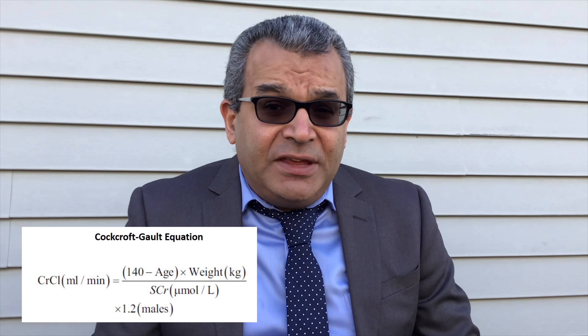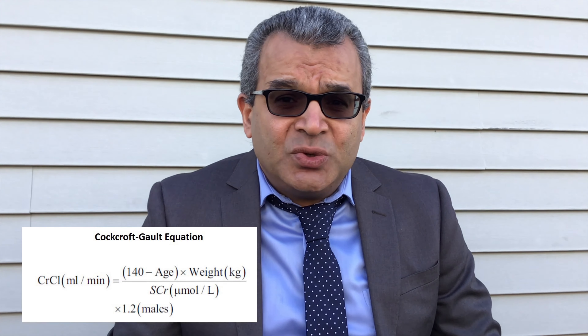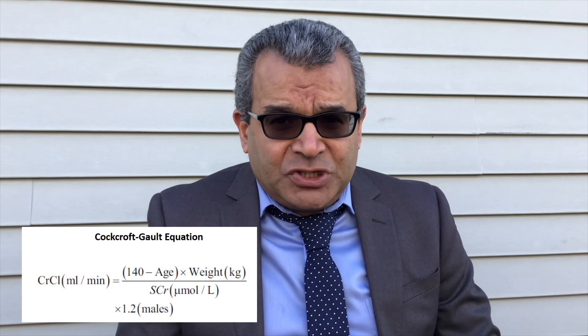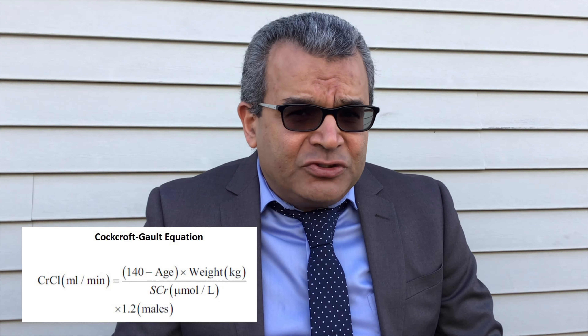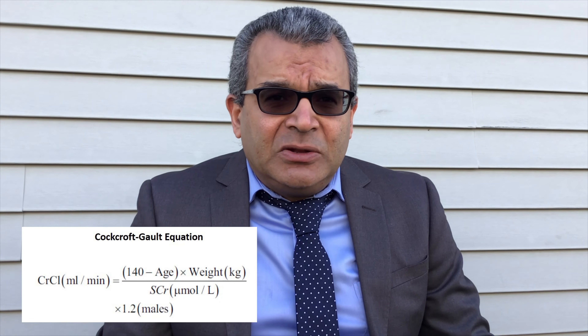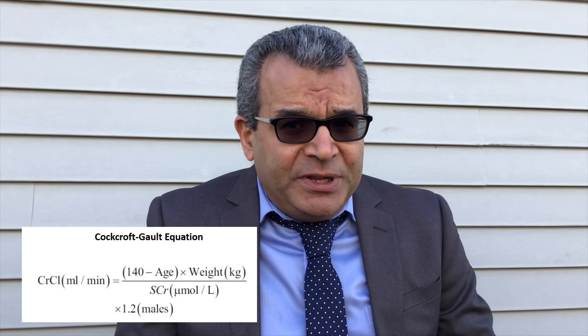The last point is which equation to use for calculating creatinine clearance. It's important to use the Cockcroft-Gault equation when adjusting medications based on kidney function, because most drug studies that include patients with renal impairment use Cockcroft-Gault. Other GFR measures like the MDRD equation are useful for staging kidney impairment rather than drug dosing.